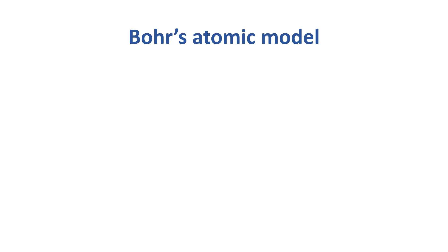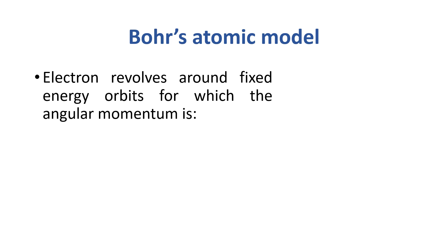Next, we start with the Bohr's atomic model. Bohr's atomic model says that electron revolves around a fixed energy orbit for which the angular momentum is mvr equals to nh over 2π. In simple words, the angular momentum mvr is the integral multiple of h over 2π.